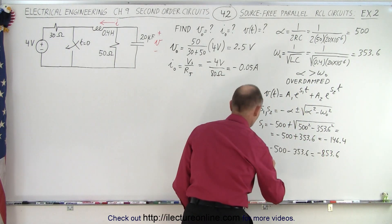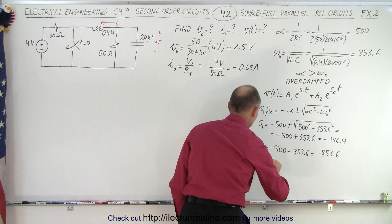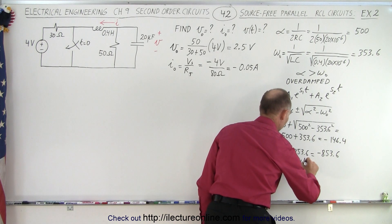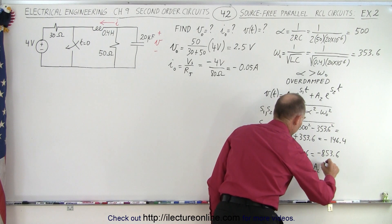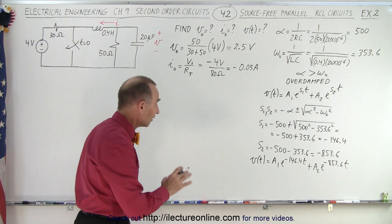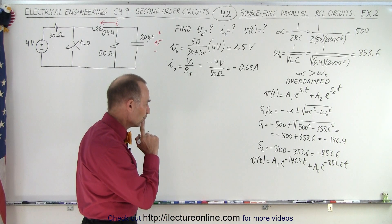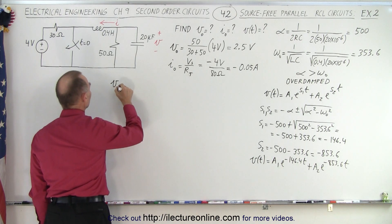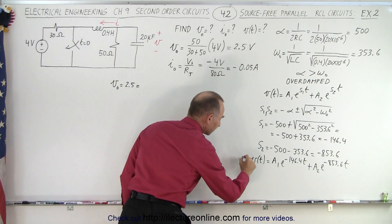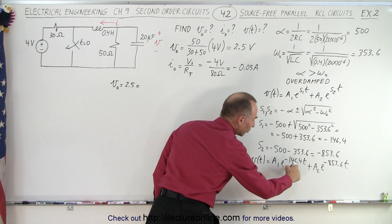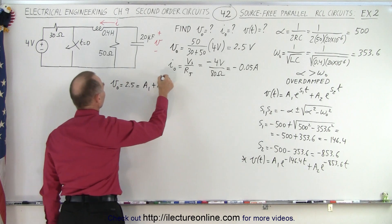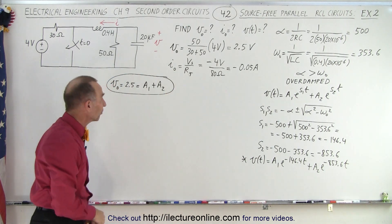We can plug that into the equation, so we get the voltage as a function of time, which is equal to A1 times E to the minus 146.4T plus A2 E to the minus 853.6T. All we have left to do now is find the values for A1 and A2. So we'll start off by saying that V initial, which is equal to 2.5, is going to be equal to this equation when T is equal to 0. E to the 0 of course becomes 1, that means we simply have A1 plus A2. So we have our first equation that tells us that 2.5 is equal to the sum of A1 plus A2.